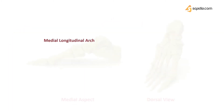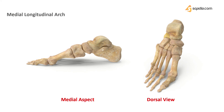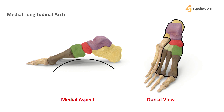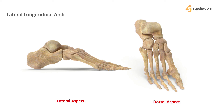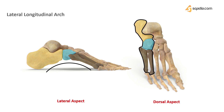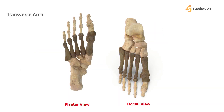The medial longitudinal arch consists of the calcaneum, the talus, the navicular, the three cuneiforms, and the three metatarsal bones. Then the calcaneus, the cuboid, and the fourth and fifth metatarsal bones help in the formation of the lateral longitudinal arch. The bases of the metatarsal bones, the cuboid, and the three cuneiform bones help in the formation of the transverse arch of the foot. Let's discuss every bone in detail in the next section.